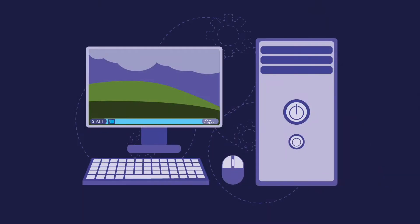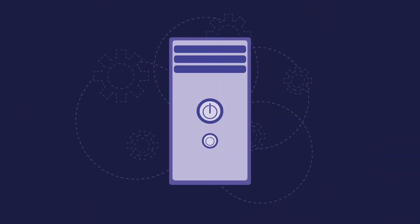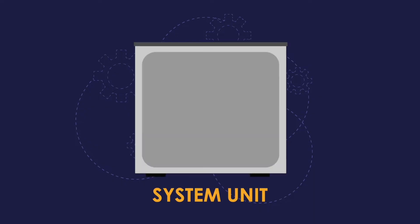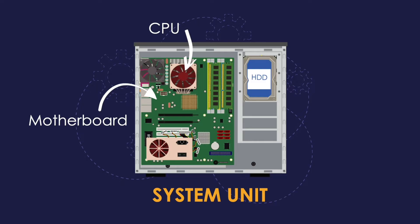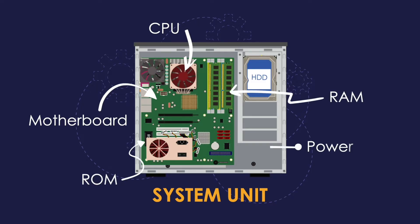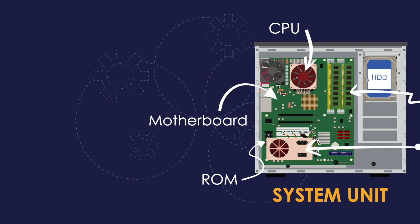The system unit, also known as a tower or computer case, is the main part of the computer system. It is made of metal or plastic and holds the computer's main components, including the motherboard, central processing unit or CPU, random access memory, read-only memory, ports, and power supply.